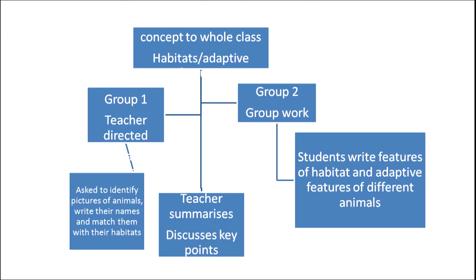In the slide shown on screen, we can see how the teacher can manage the classroom for this activity. The concept can be explained to the whole class together — discussing habitats and adaptive features. After dividing the class into two groups, group one can have a more teacher-directed activity since these children need more attention. After thoroughly explaining the concept, the teacher gives a worksheet where students match animals with pictures, write animal names, and write one adaptive feature. Group two can meanwhile be involved in more group work.